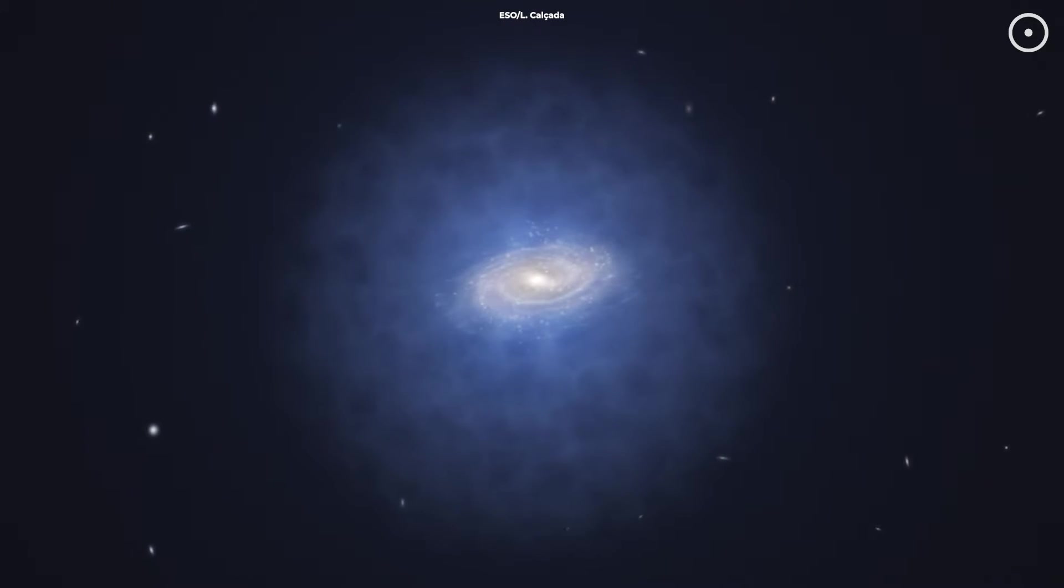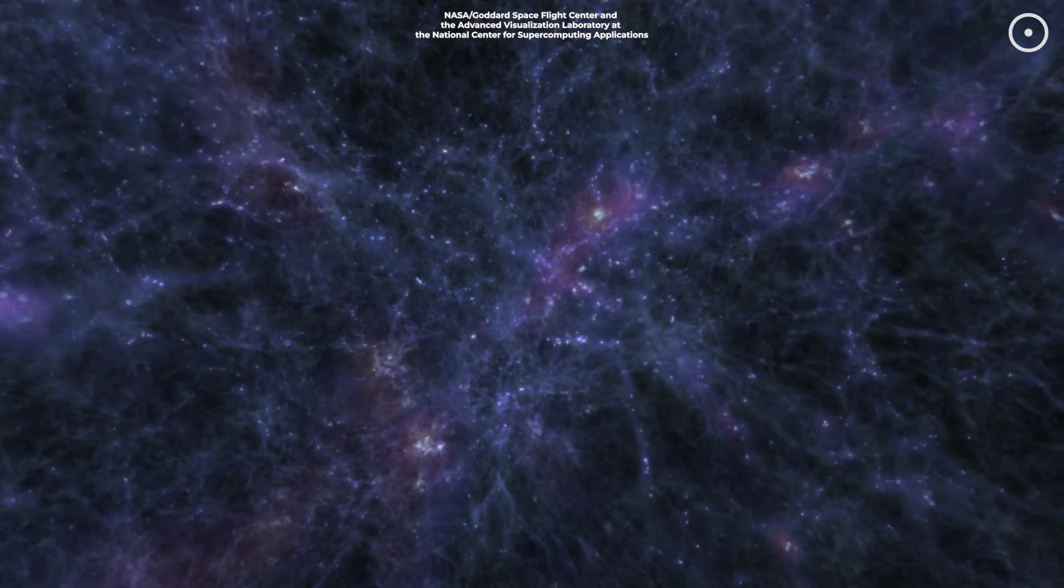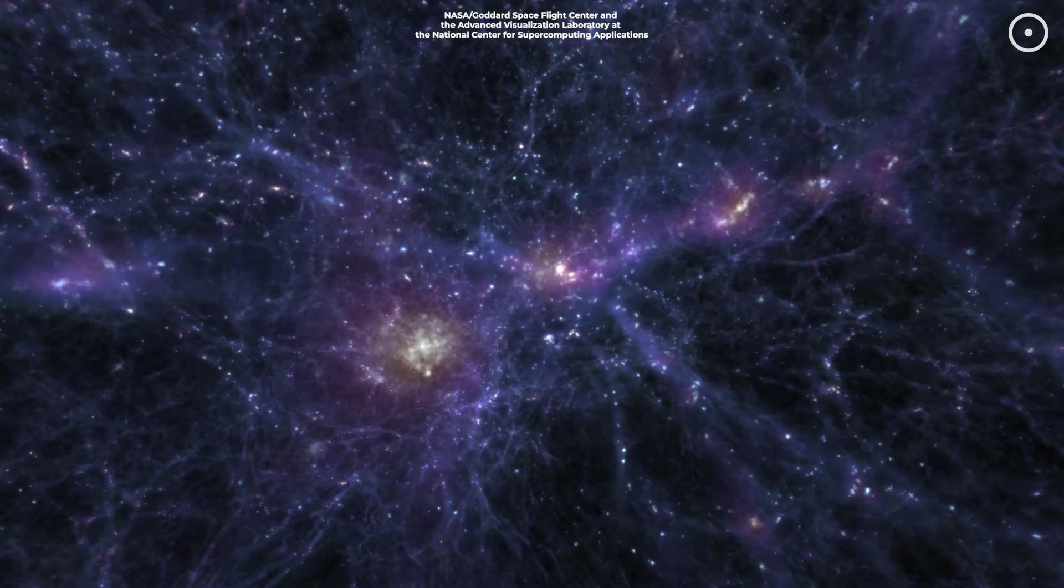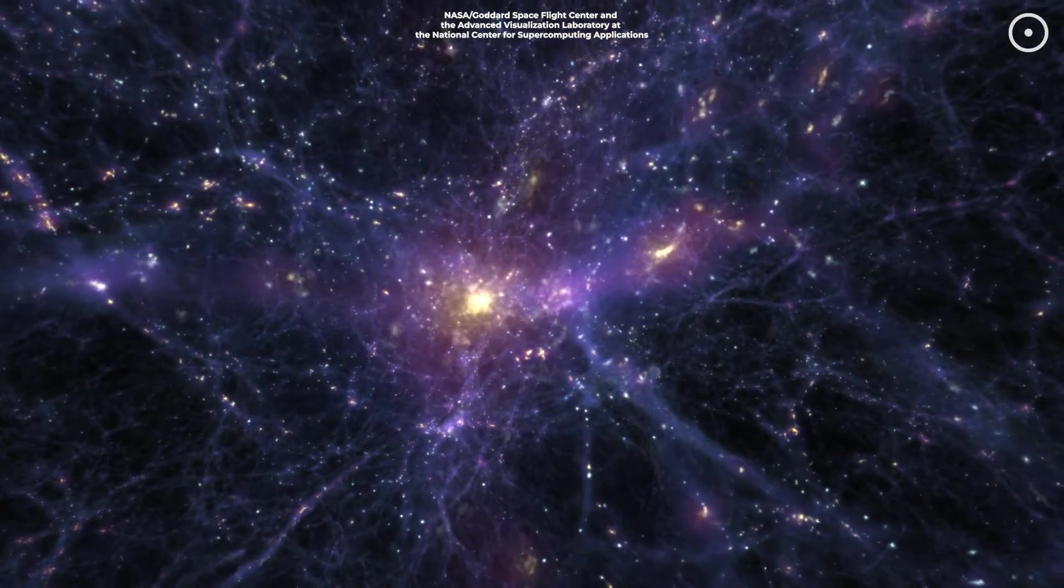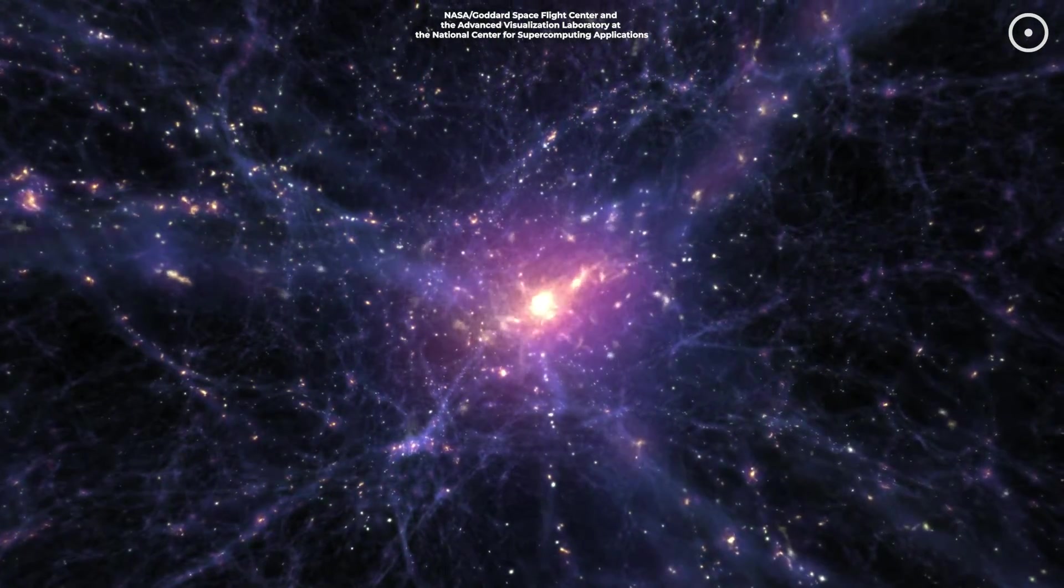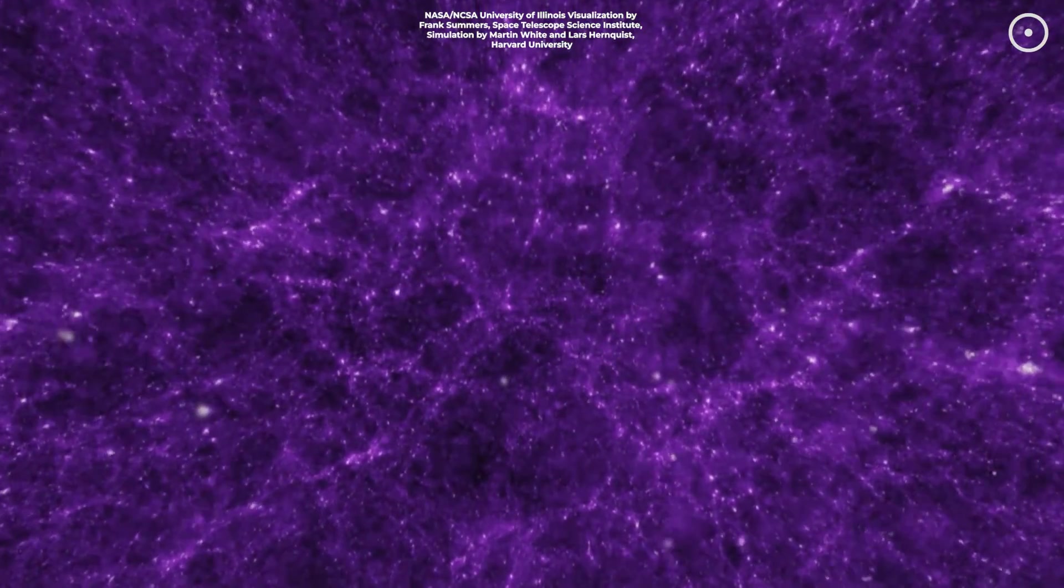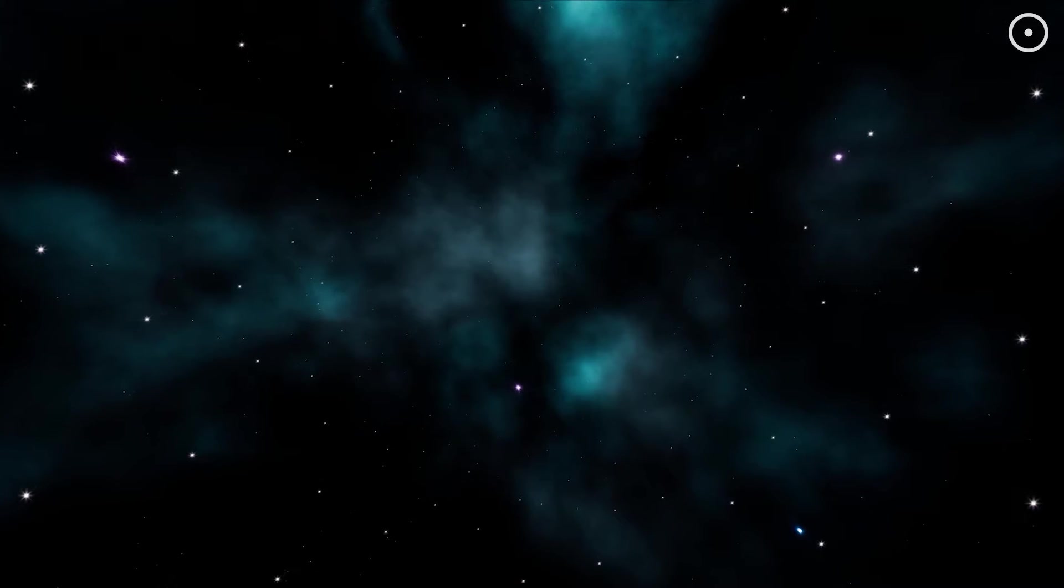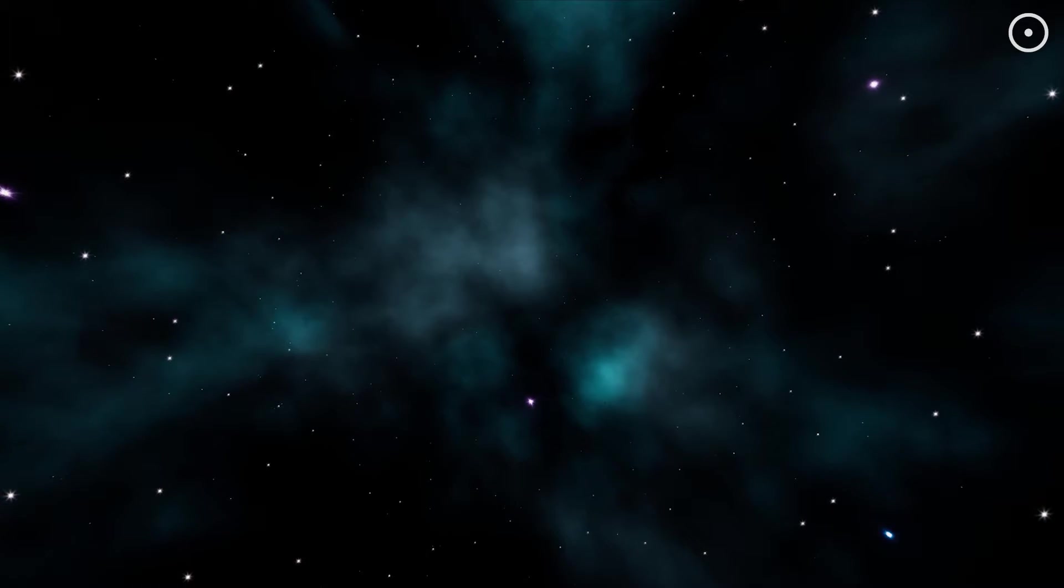And it's not just about galaxy formation. Dark matter influences the structure of the entire universe. It forms a scaffold, a sort of cosmic web on which galaxies are built. This web shapes the large-scale structure of the universe, determining where galaxies form and how they move. Understanding dark matter also helps us in understanding more about the universe's history, its present, and its future. It's like a detective story where dark matter holds some key clues to the universe's mysteries.